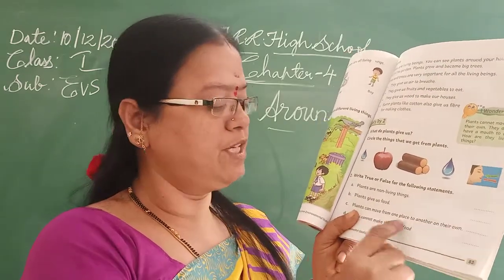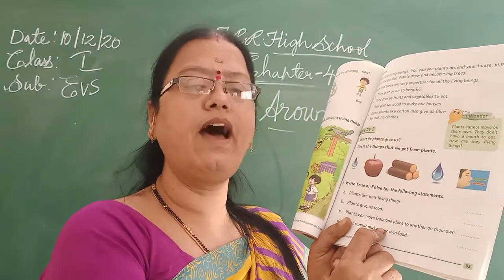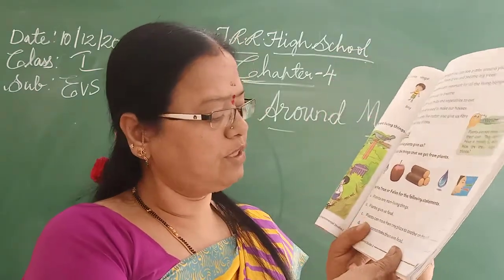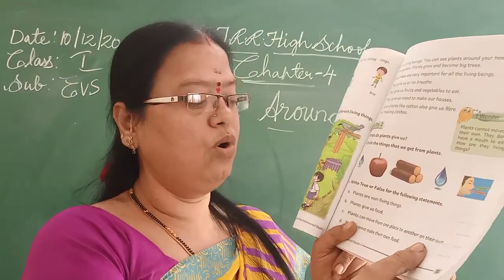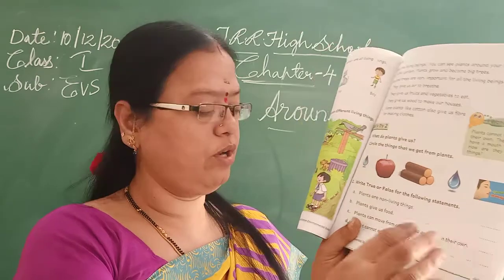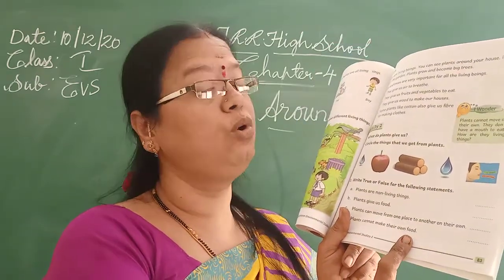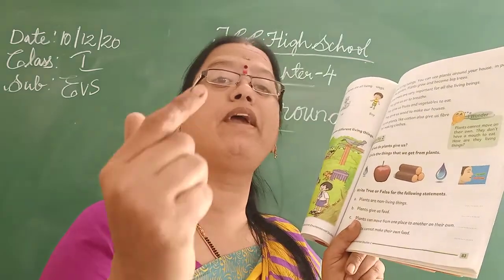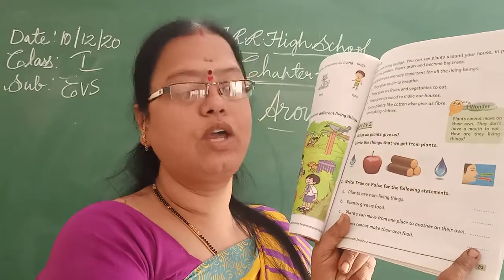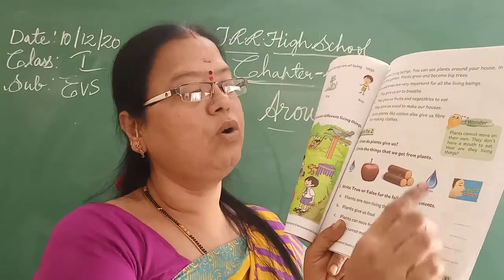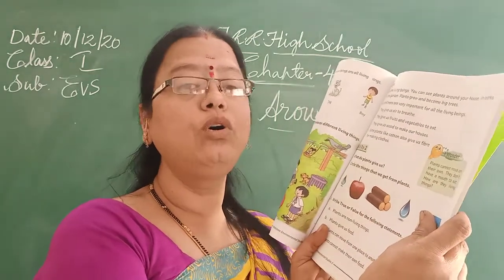'Plants can move from one place to another place' — no, plants cannot move, so that is false. 'Plants cannot make their own food' — no, plants can make their own food, so that statement is wrong, write false. 'Plants cannot move on their own' — yes, plants cannot move, so write true.